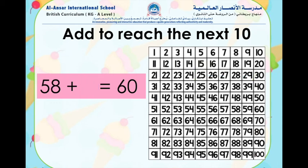Now let's try this one: 58 plus what number equals 60? Find the number on the number chart and count how many to reach the number 60. If you guessed that we need 2 more to reach 60, amazing — super job! So 58 plus 2 equals 60.